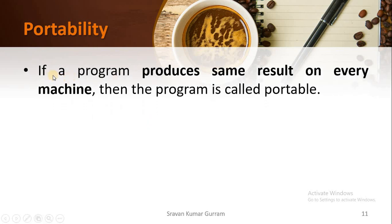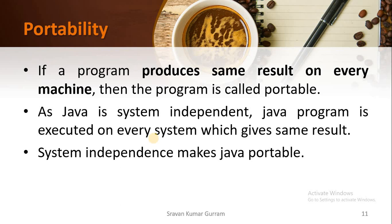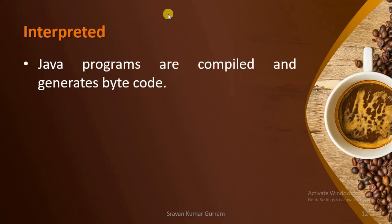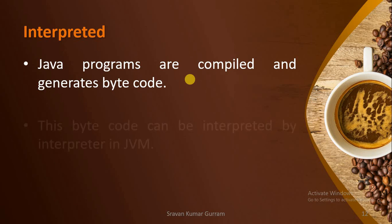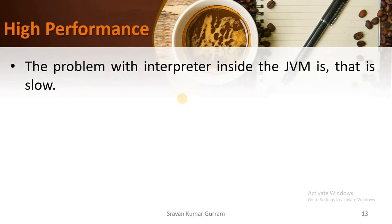Portability. If a program produces the same result on every machine, then the program is called portable. A Java program is executed on every system and gives the same result because it is system independent — it doesn't depend on any system. This system independence makes Java portable. Java programs are also compiled and generate bytecode. After that, Java uses an interpreter to interpret the bytecode inside the JVM.